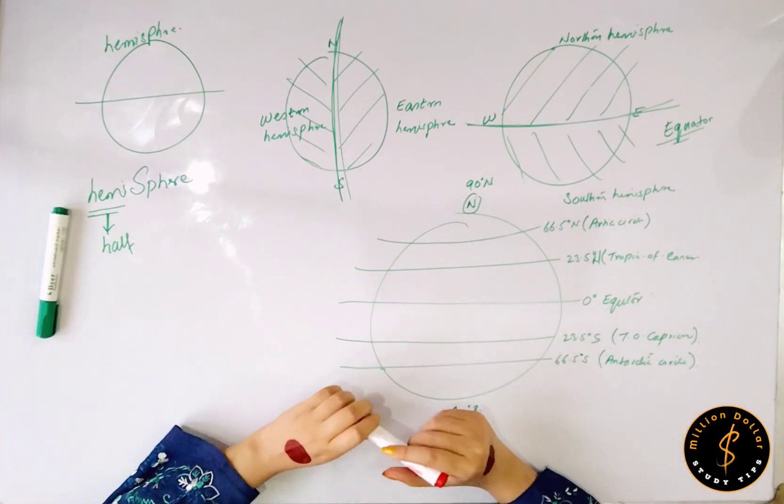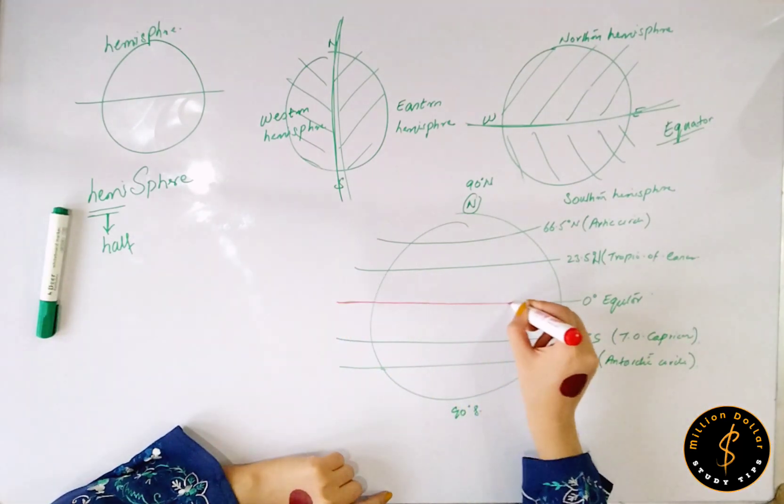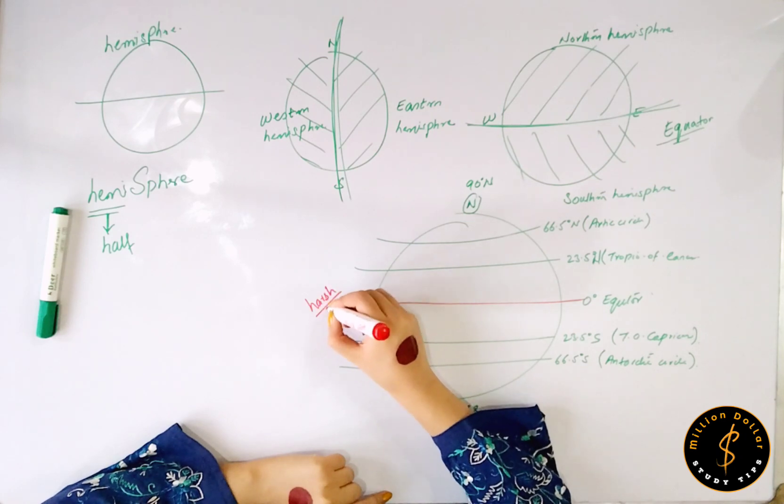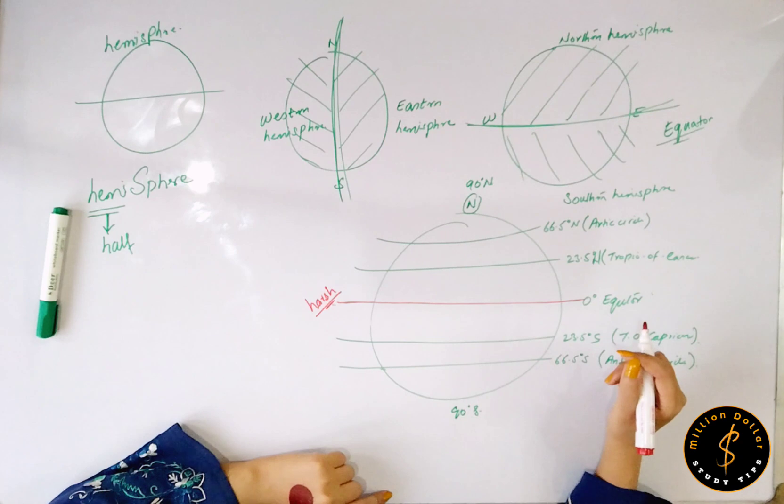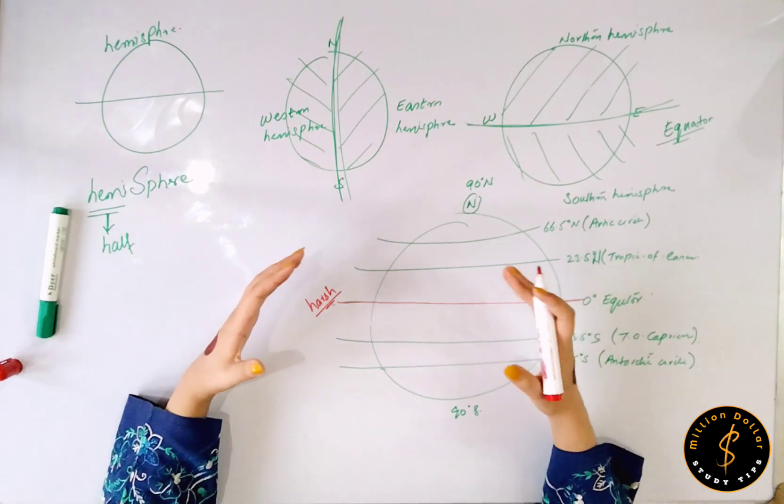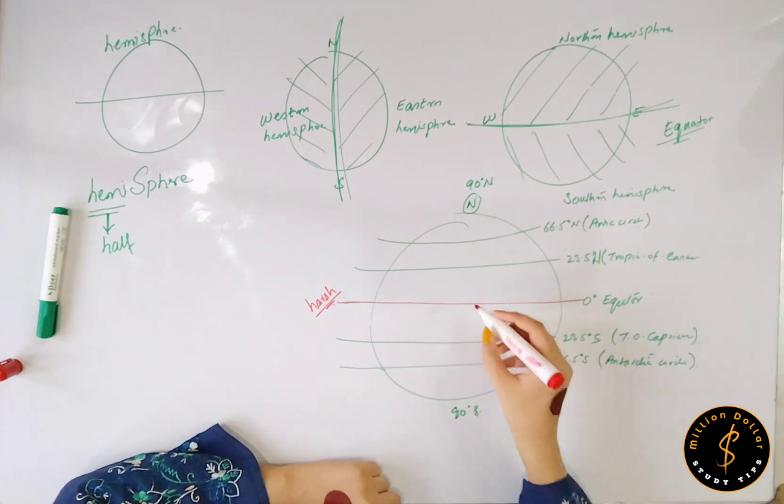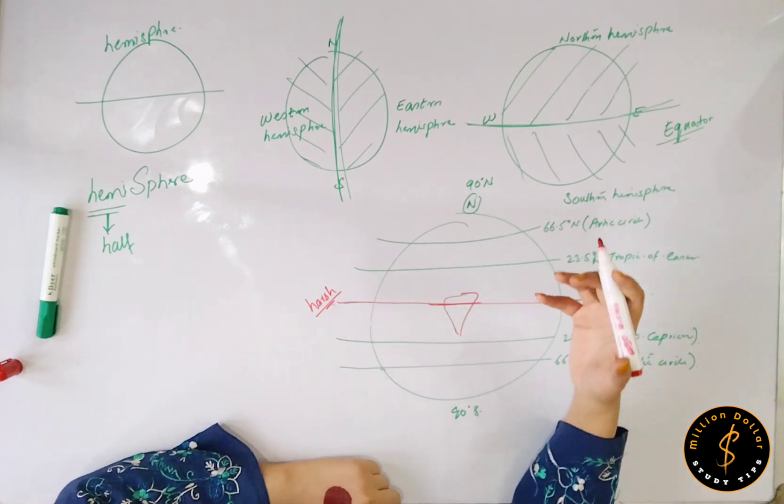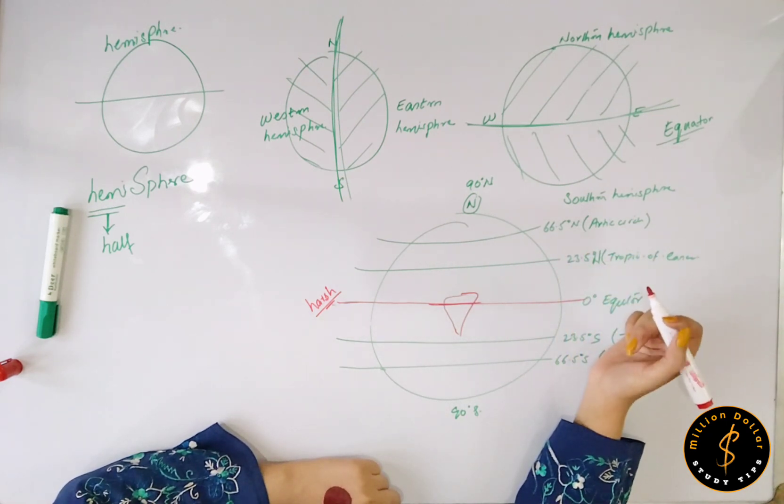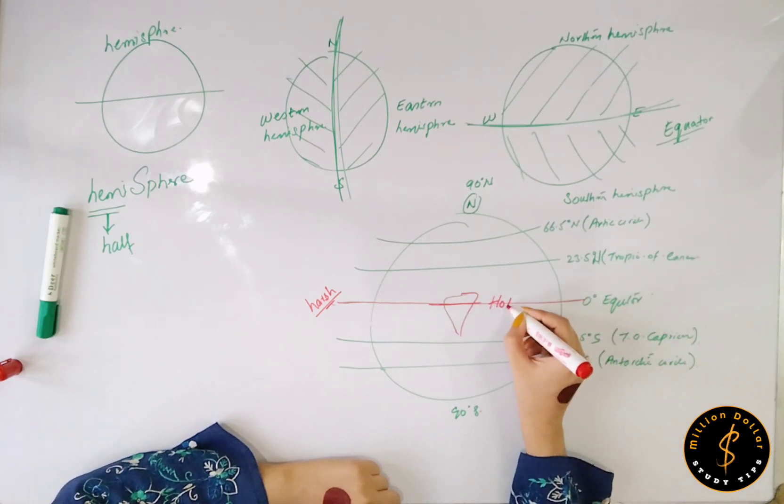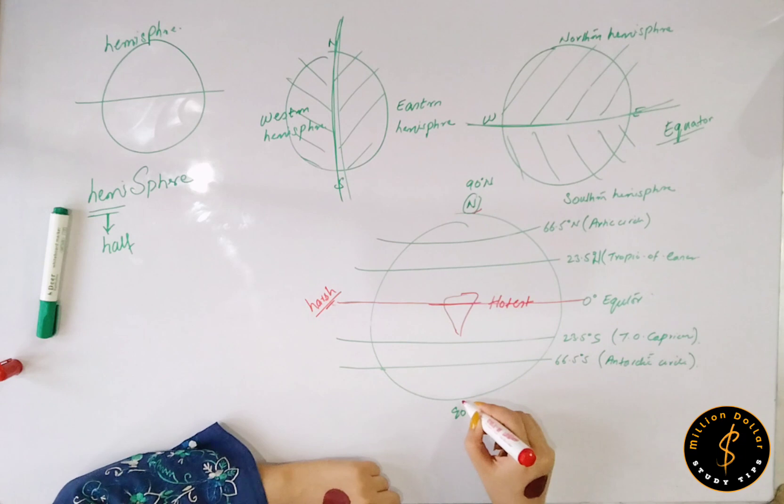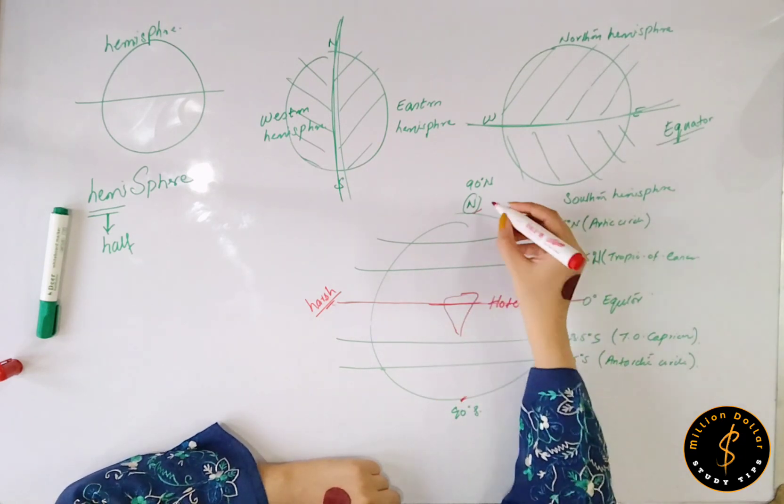So wherever your equator passes, in the countries through which your equator passes, there is very harsh climate. You know, very severe conditions. For example, Sahara is the hottest desert of the planet Earth, and that is why this whole region is the hottest.